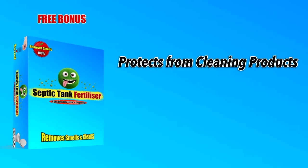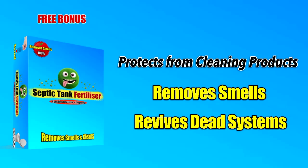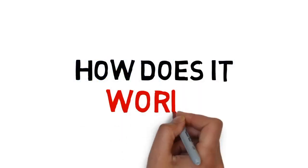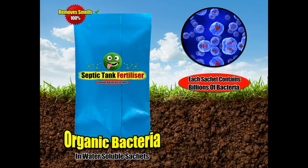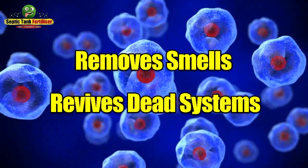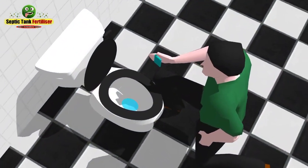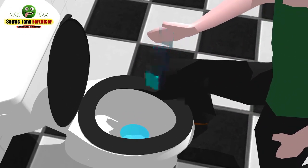But that's not all — with each bucket we're also giving away a free bonus gift called septic tank fertilizer. If you've never heard of it, it's one of the best-selling products, designed to protect your septic tank from the harmful effects of cleaning products. It also removes smells and revives dead sewage systems. One year's treatment of this amazing bacterial product normally costs £149, but today you can have it for free with a bucket of worms. In each of the 12 water-soluble sachets there are billions of organic bacteria and enzymes which remove smells, revive dead systems, and prevent 99% of all septic tank problems.